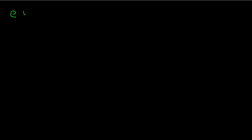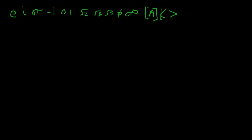Hello everyone, this is Mr. 13 Things — remembering that the 13 things are: E, I (the imaginary number), pi, minus 1, 0, 1, the square root of 2, the square root of 3, the square root of 5, the golden ratio phi, infinity, a matrix A, and a vector x. 13 things.